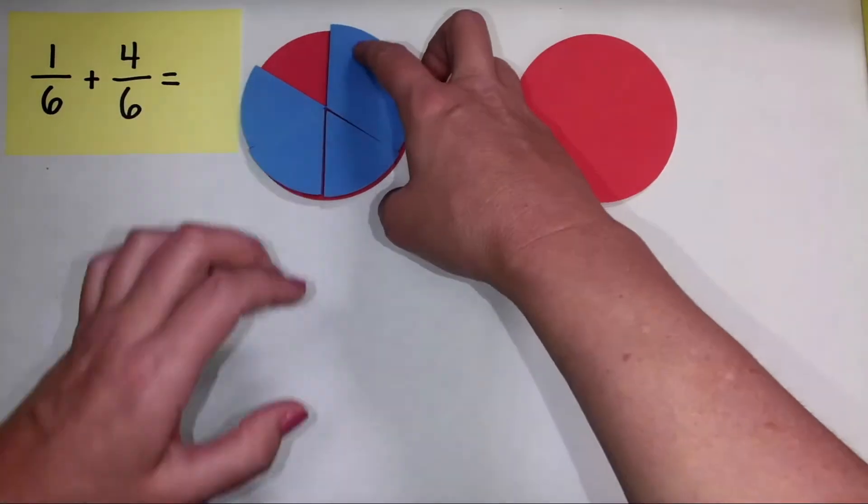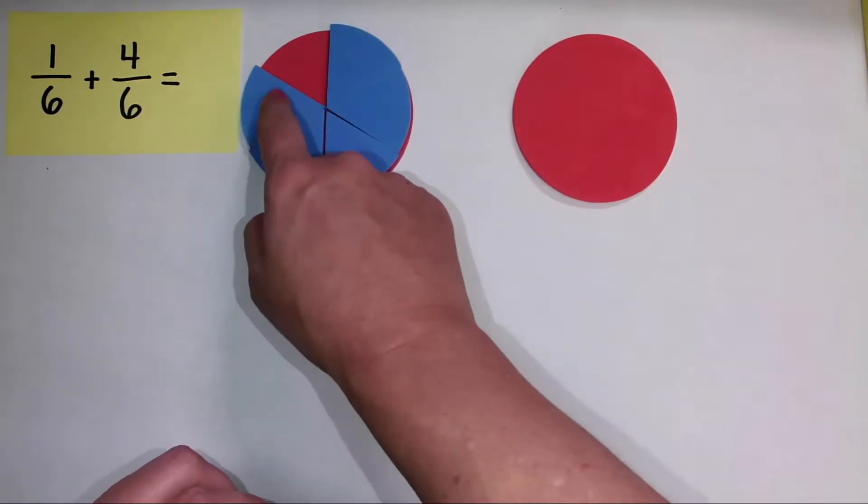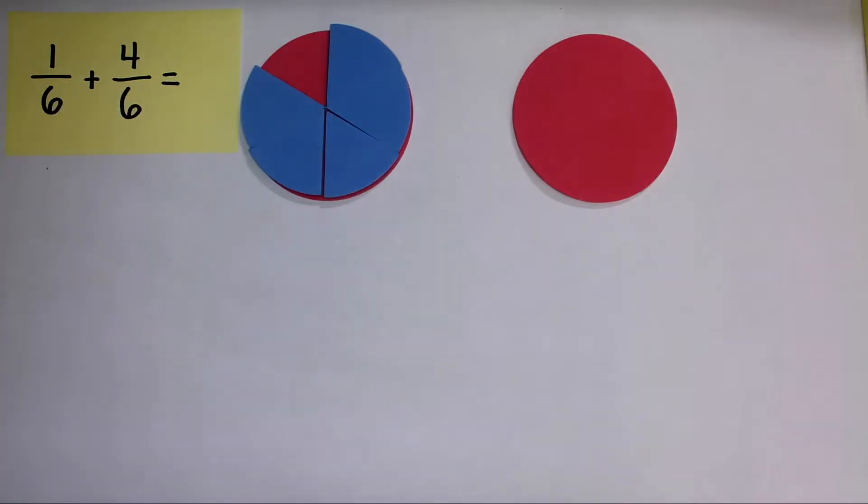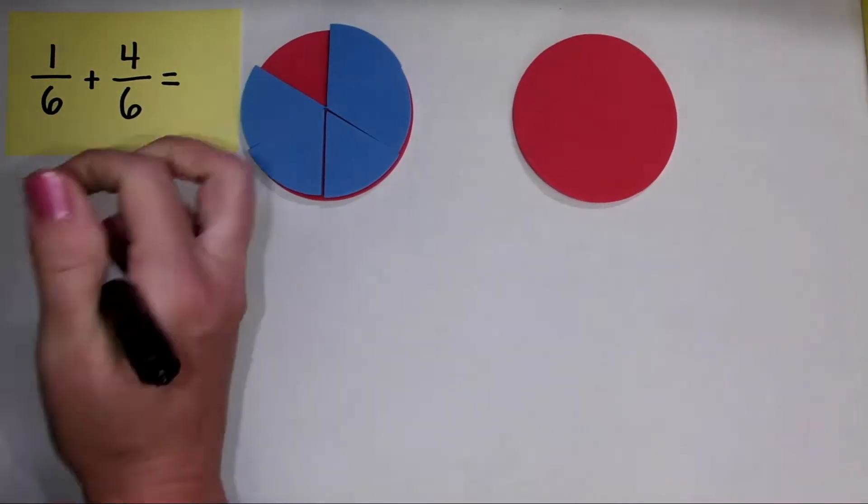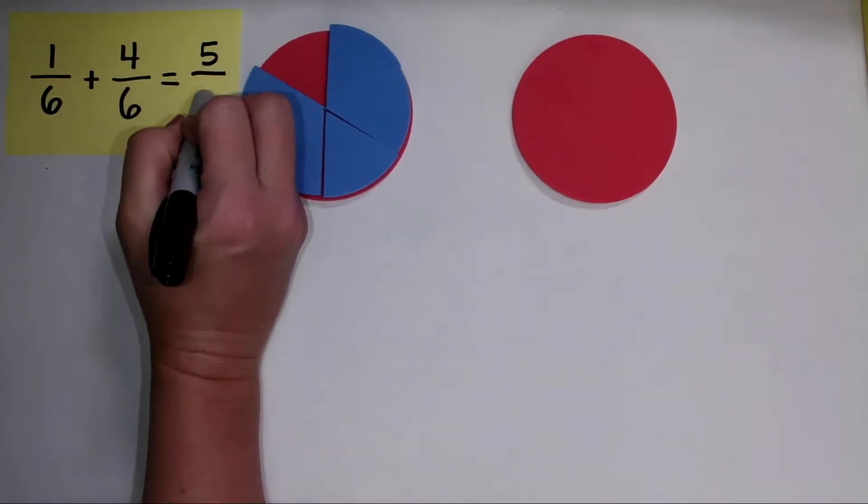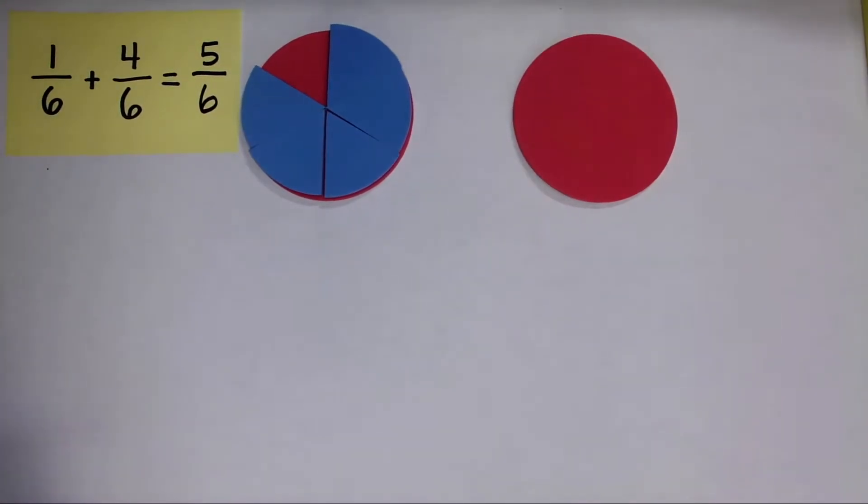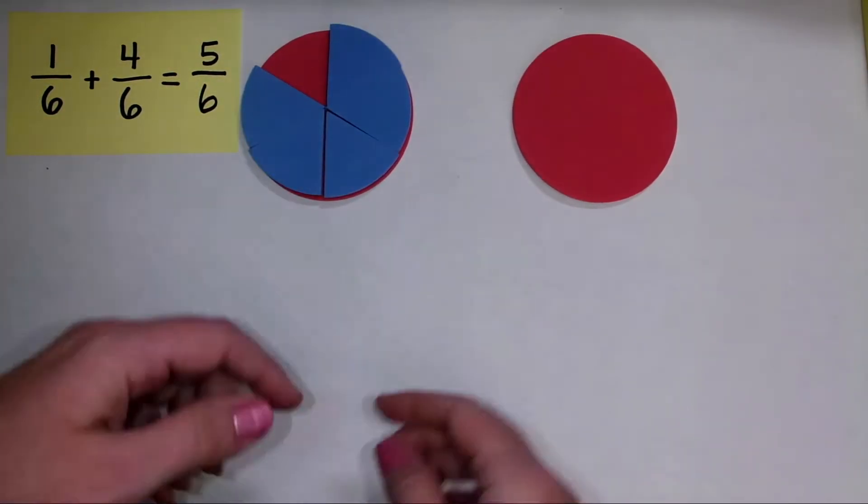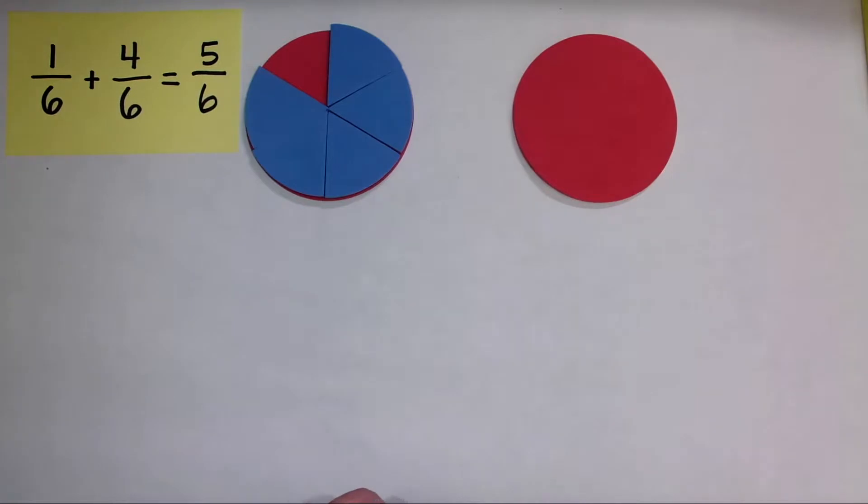So when I have one sixth and I add four sixths, our sum is five sixths. Now I always like to write that down to make sure that our abstract form of the problem matches our concrete form of the problem.